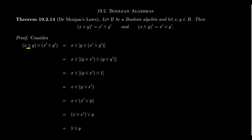Because we have a join and a join, we can use associativity and rewrite this as X join Y join X complement, all meet Y complement. Then since we have a join and a meet, we can distribute the join Y across the meet, giving us Y join X complement meet Y join Y complement. But we know that Y join Y complement equals one, since Y complement is the complement of Y.